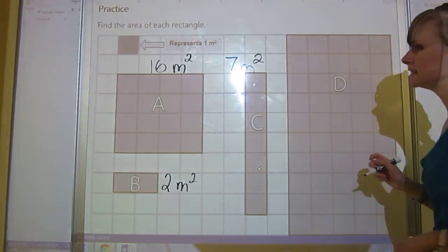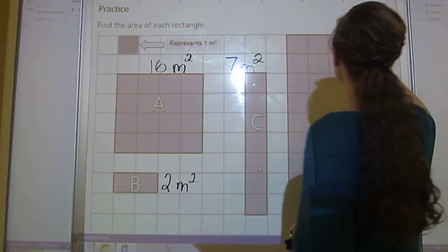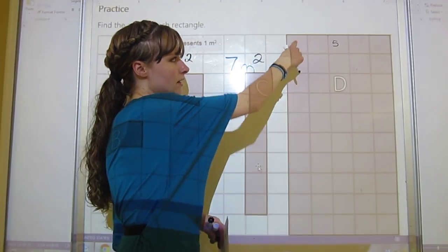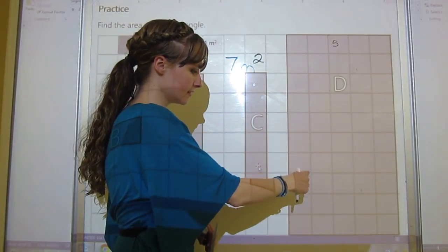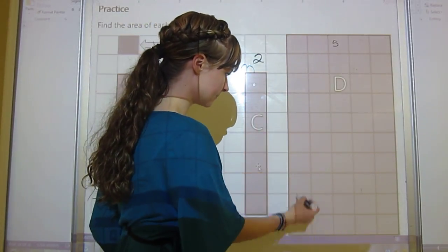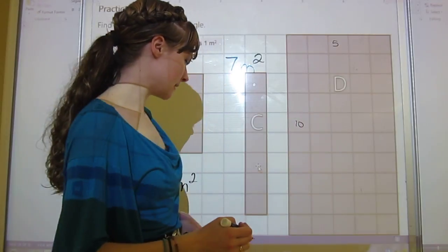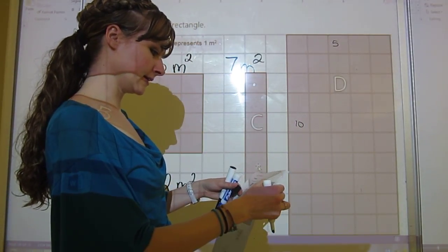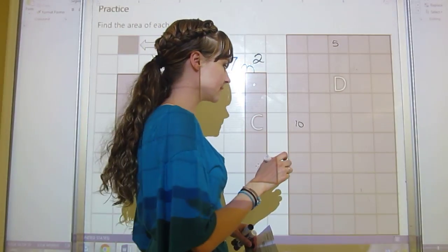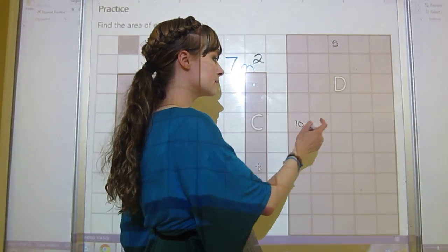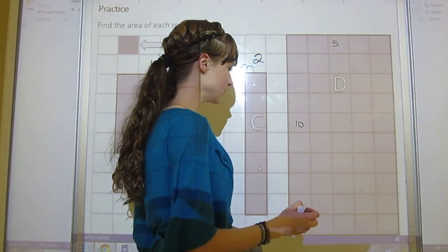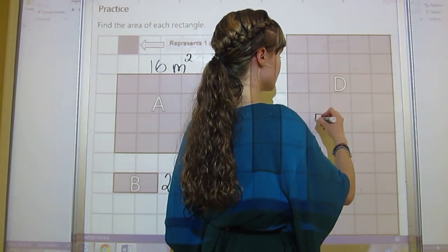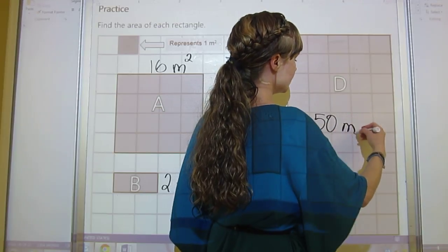Lastly, we've got D. This is the big one. We've got 1, 2, 3, 4, 5, so it's 5 across. And then we've got 1, 2, 3, 4, 5, 6, 7, 8, 9, 10. This is 10. I just wanted to make sure it wasn't off my screen. So we can go 5 times 10, and that equals 50. I'm just going to write it right on my box here. So 50 meters squared.